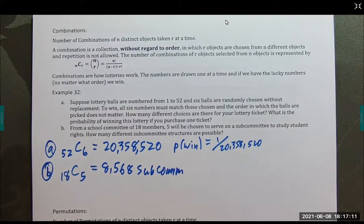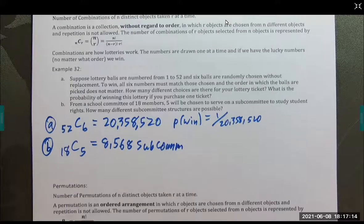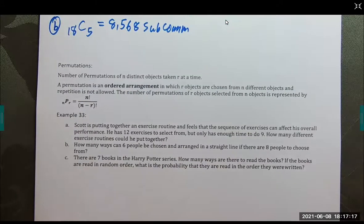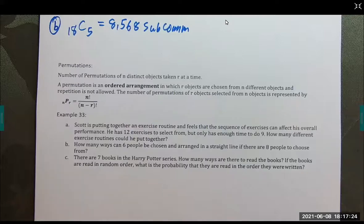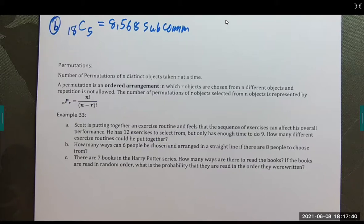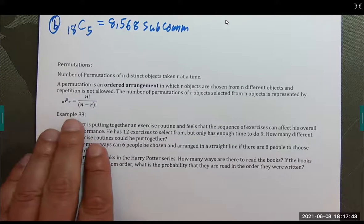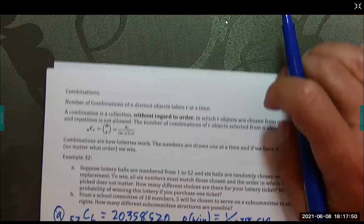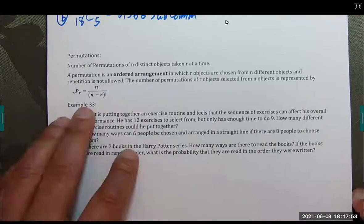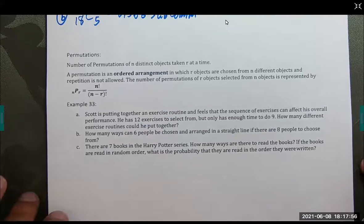Now we're on to permutations, where the order matters — like the race example. A permutation is an ordered arrangement in which r objects are chosen from n different objects without repetition. The formula is n factorial over (n minus r) factorial. Notice it's different from the combination formula — combinations have the extra r factorial in the denominator to divide out the extra arrangements.